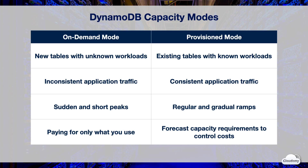On-demand mode is suited for unknown or changing workloads. When you create a new table, on-demand capacity is a good option to help establish a baseline before switching to provisioned mode at a later stage. On-demand capacity is also suited when you have inconsistent application traffic or sudden spikes, and when you store time-based data that requires only infrequent access — you only pay for what you use.